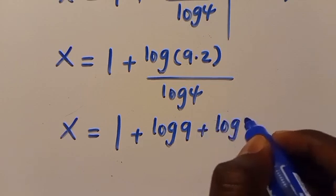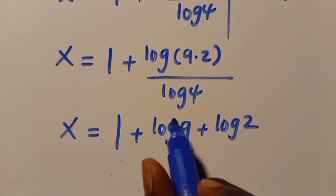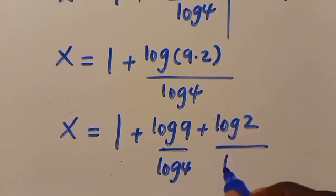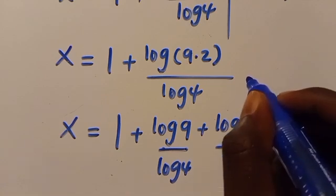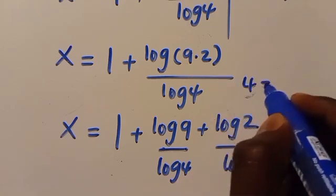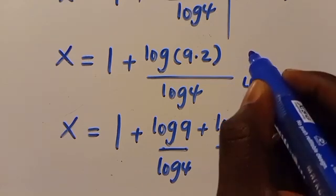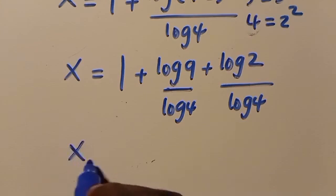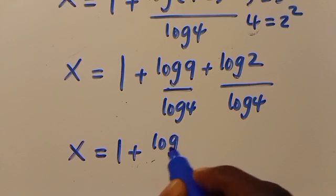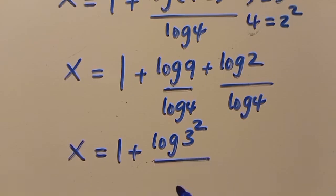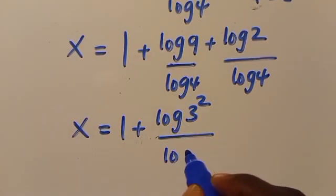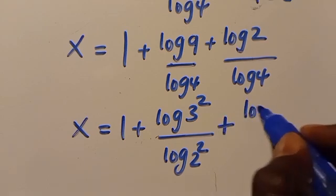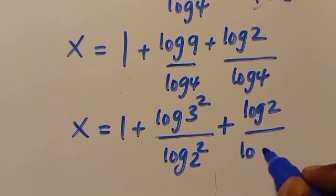Expanding using the log product rule, we have x equals 1 plus (log 9 plus log 2) over log 4. Now, we express 4 as 2 squared and 9 as 3 squared. So log 4 becomes log(2²) and log 9 becomes log(3²), giving x equals 1 plus log(3²) over log(2²) plus log 2 over log(2²).